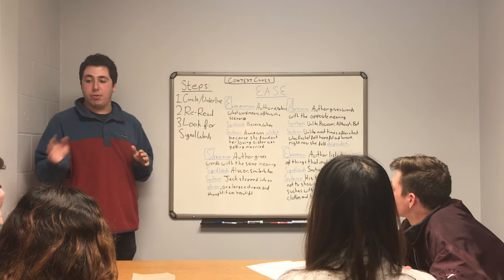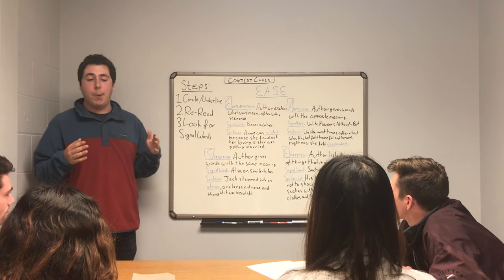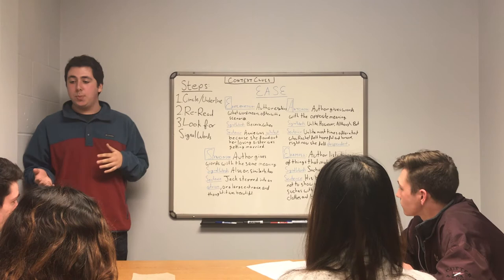The next thing we do is go back and re-read that sentence. Oftentimes this helps because it helps us understand information we missed the first time around. If it's not helping us, it also helps to re-read the sentence before and after. The third thing we're going to do is look for signal words. Signal words are a kind of word that tells us what type of context clue to use.